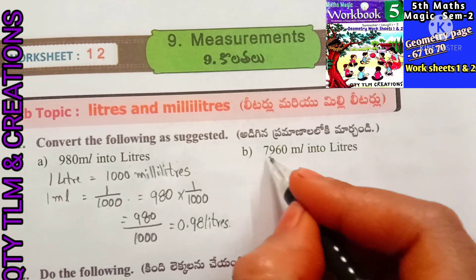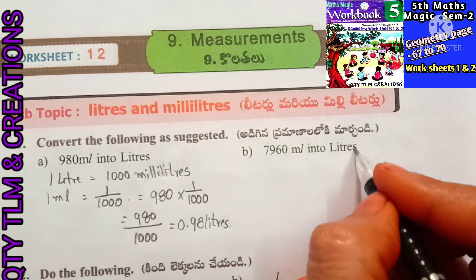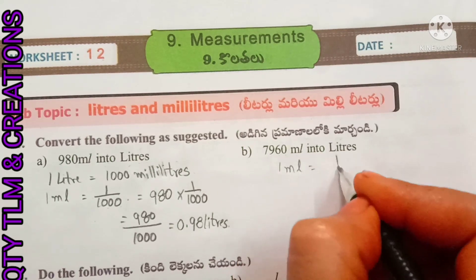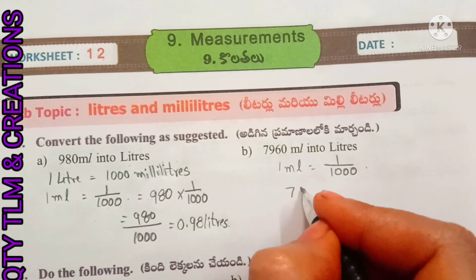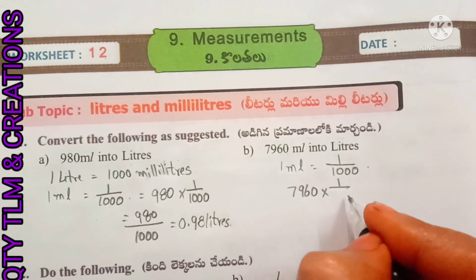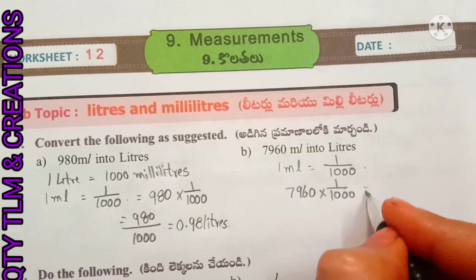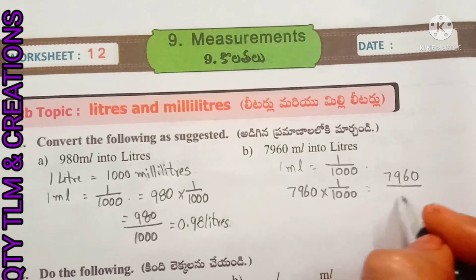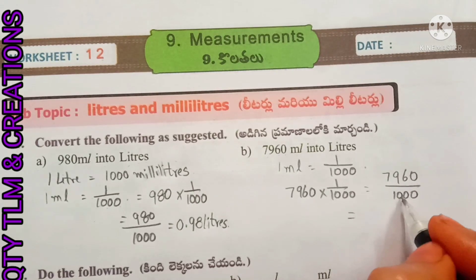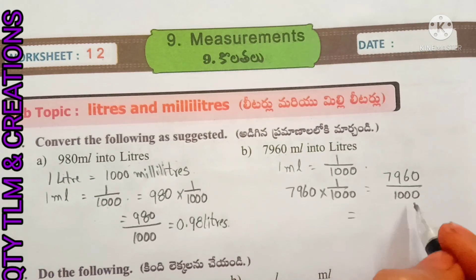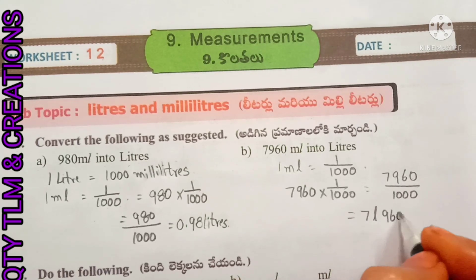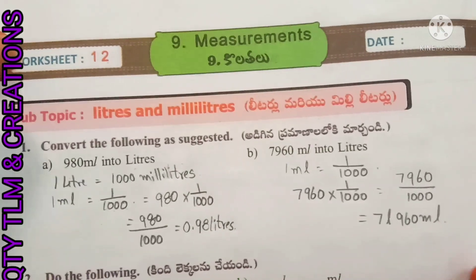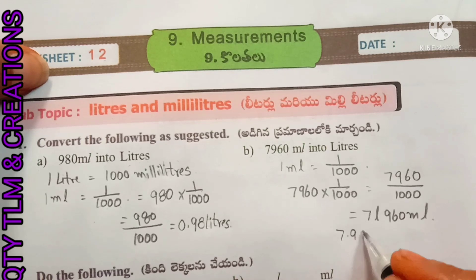(b) 7,960 milliliters into liters. 1 milliliter equals 1/1000 liter, so 7,960 × (1/1000) = 7,960 ÷ 1000. When we divide 7,960 by 1000, we get 7 liters and 960 milliliters, or 7.96 liters.